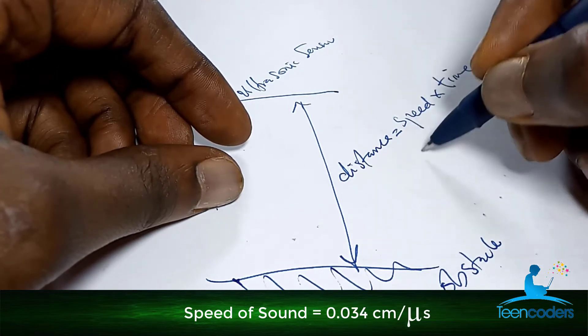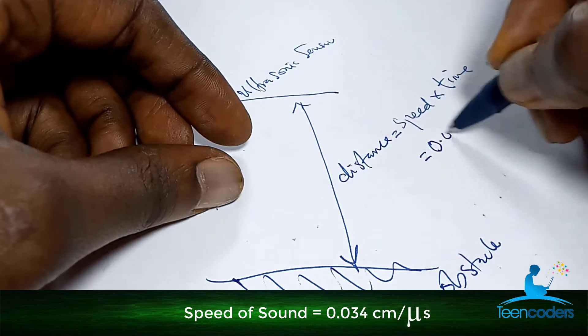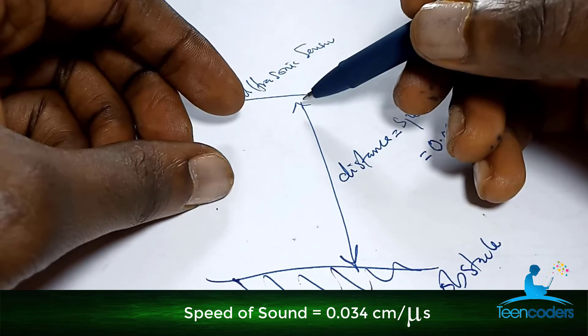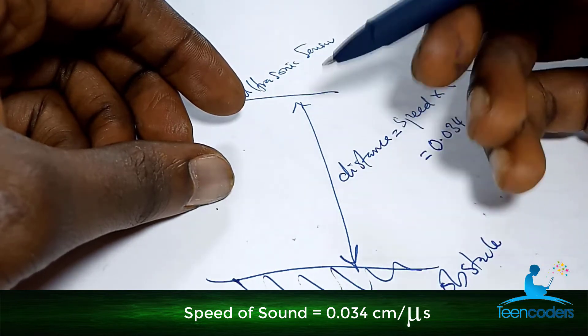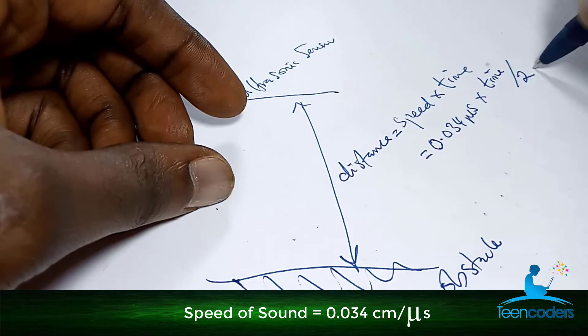In this case, we'll work with the speed of sound. The speed of sound is equal to 0.034. And then the time, in this case, the sound will travel to and fro, that means the sound will travel twice. So we have time will be divided by 2.